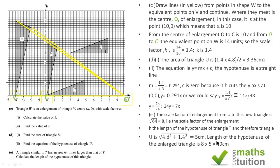So, in effect, the length of the hypotenuse of the enlarged triangle is now 8 times 5 centimeters, that becomes 40 centimeters.